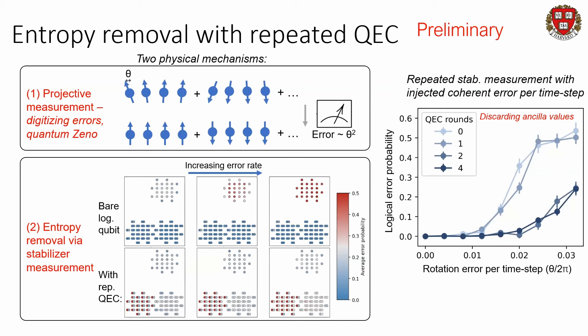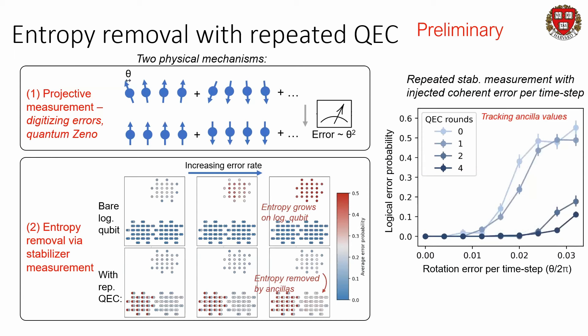When we do repeated error correction, we take some of this entropy and dump it into the ancillas — moving entropy into our cold bath of ancillas. This allows us to remove the entropy on our data qubit array. By tracking the ancilla values, we further suppress the error from these coherent errors injecting entropy into the system. But now we really need a way to remove entropy from the ancillas, because we took all this entropy from our data qubits into our ancilla qubits — and now we can't use our ancilla qubits anymore because they're hot.